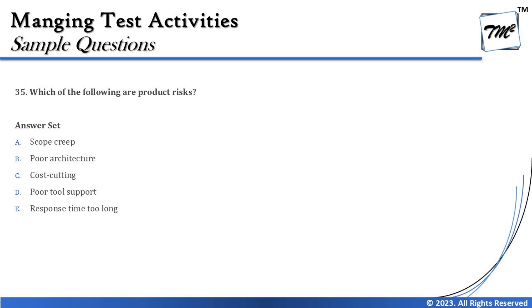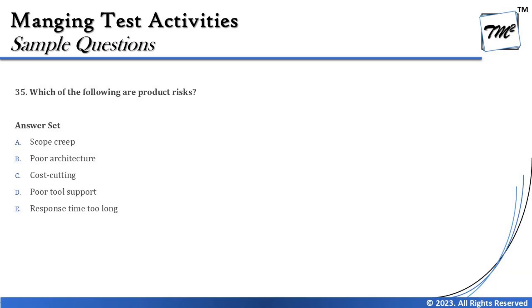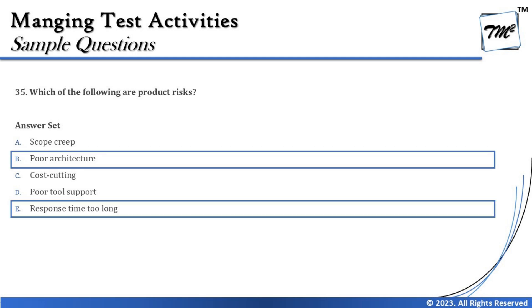Option D says poor tool support — tool support is related to project activities and is a project risk. Option E says response time too long — this is directly a performance issue, and performance is a product-related quality characteristic, thus a product risk. The right answers are B — poor architecture — and E — response time too long. There were five options, so be careful to select two correct answers.